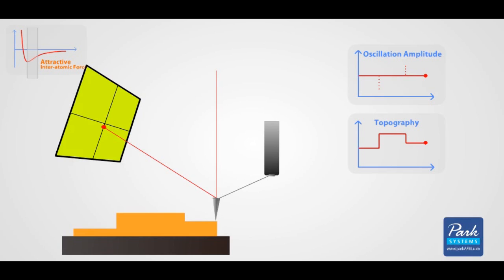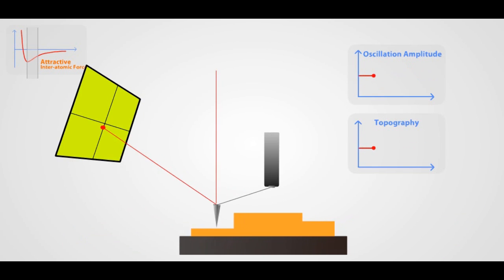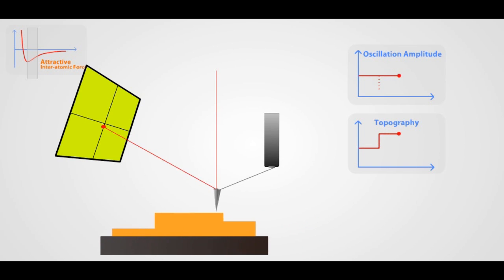As the tip approaches the surface, interactions between the tip and the surface cause the oscillation amplitude of the cantilever to decrease. The feedback loop corrects for these amplitude deviations and constructs an image of the surface topography.